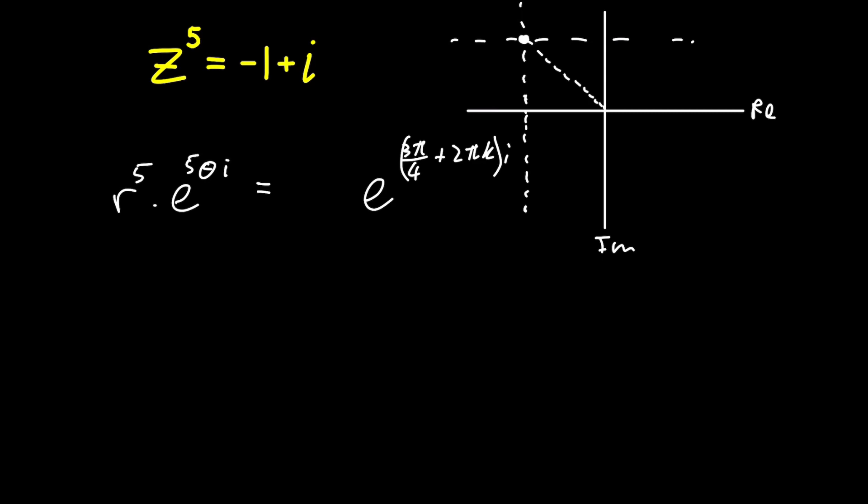Now for the modulus, which is the distance that our complex number sits from the origin, we have to calculate the length of that line. The length can be done with Pythagoras. We know that length is one and that length is one. So we have one squared plus one squared, square rooted, which is the square root of two.